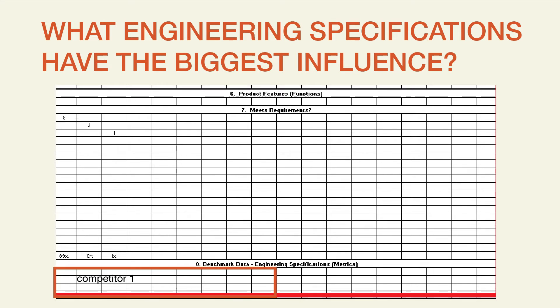What's different about this portion of the House of Quality is that it's going to contain specific numerical values of our competitors that relate to engineering specifications that we've included in our design.